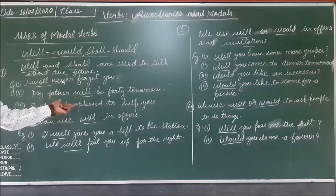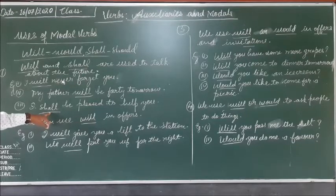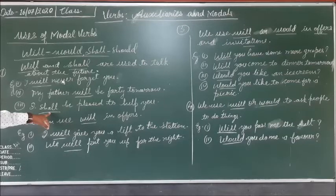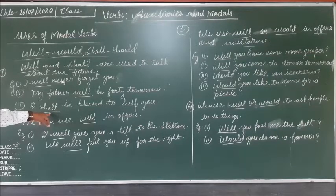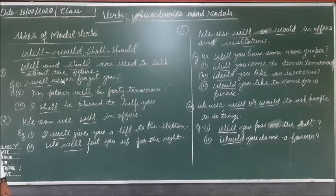'I shall be pleased to help you.' In this third example, I and shall — so shall is used with the first person subject in future tense. I and we are the two subjects of first person: I is the singular subject and we is the plural subject of first person. Shall is used with the first person subject to talk about the future. Will is used with all subjects.